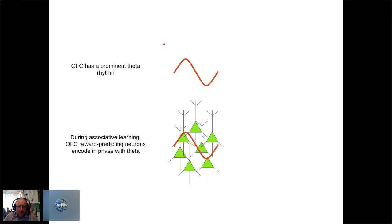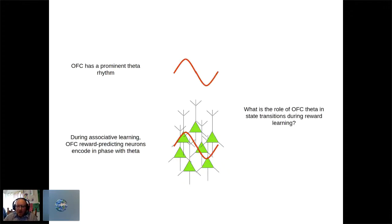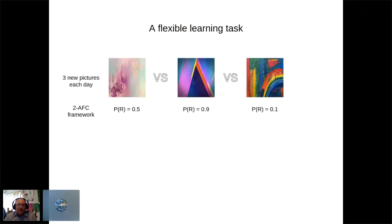OFC has a prominent theta rhythm. Importantly, during associative learning, OFC neurons in the rat encode reward predictions in phase with theta. The question becomes: during state transitions and learning, what is the role of orbital frontal cortex theta? To address this we need a flexible learning task.